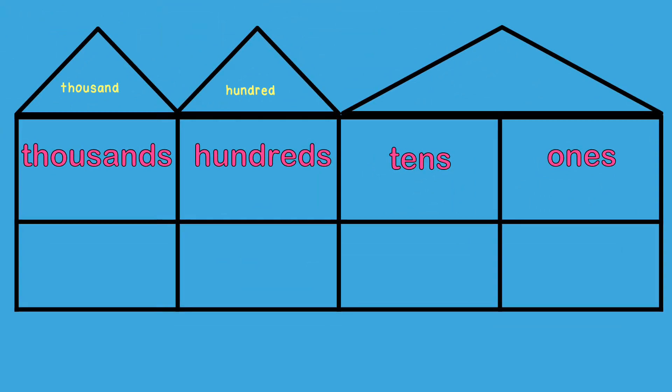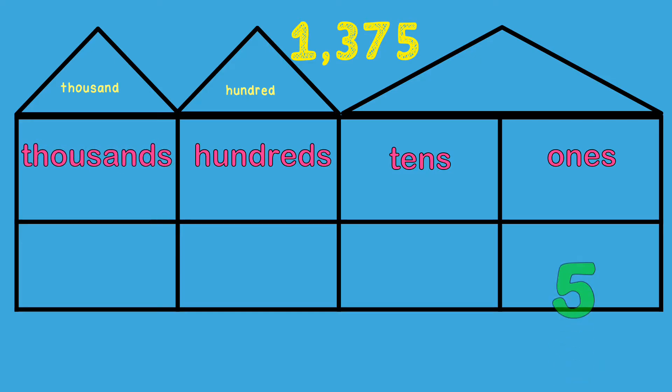One way to write a number in word form is by placing the number in a place value chart. For example, we will place the number 1,375 in the place value chart starting from the lowest value to the highest, or greatest, value.